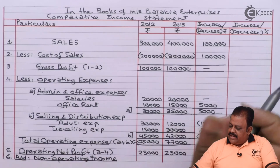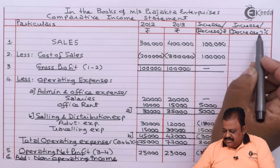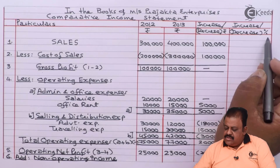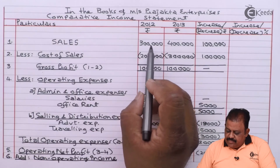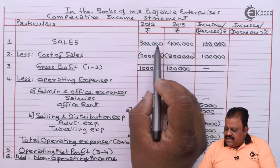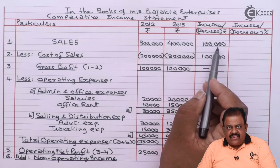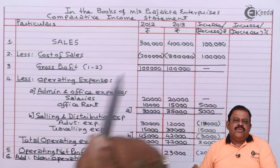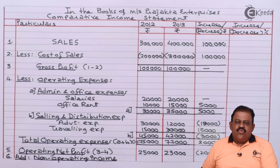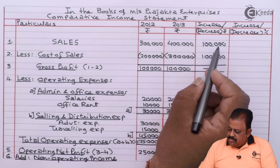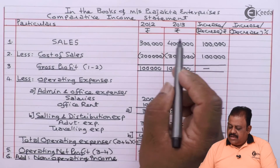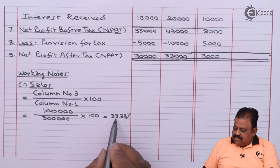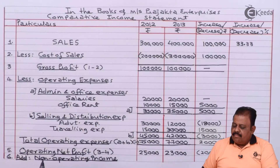Now we calculate the increase or decrease in percentage form. The formula is: column 3 (absolute change) divided by column 1 (base year amount), multiplied by 100. For sales, on 3 lakhs there is a rise of 1 lakh, so the percentage increase is 33.33%.